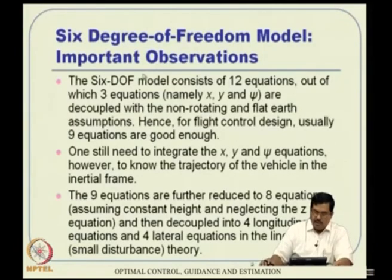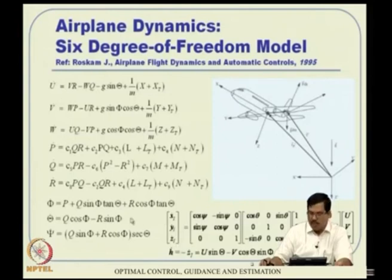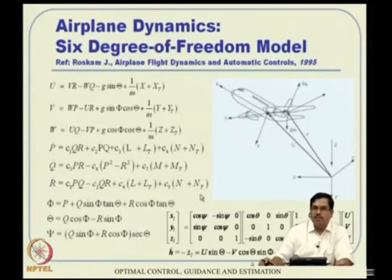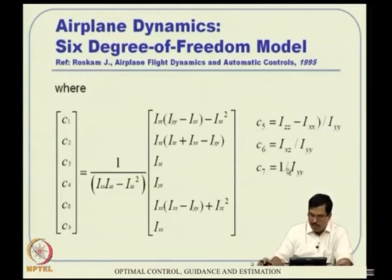Before proceeding, some further comments: the 6DOF model consists of twelve equations, out of which three equations are decoupled under the non-rotating flat earth assumption. Under this assumption, psi, x, and y do not appear in the rest of the equations. So while there are technically twelve equations, under the non-rotating flat earth assumption one can work with nine equations as far as local control design is concerned. Control design is typically local — short duration stability problems — not long-duration trajectory problems.